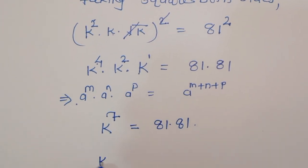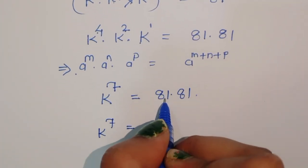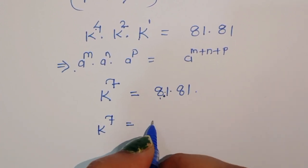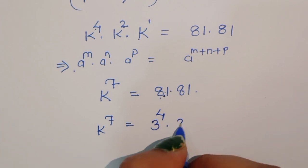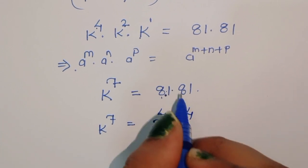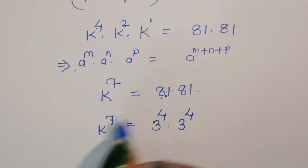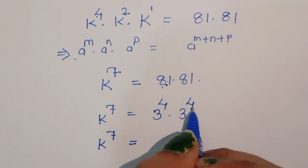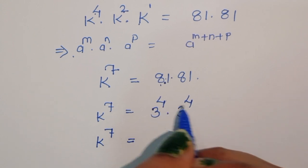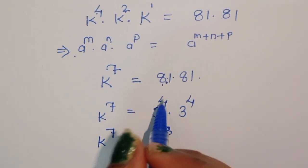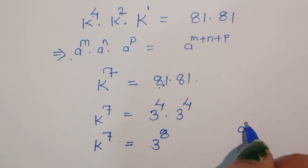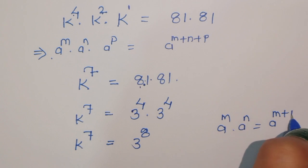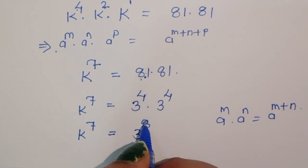Now k to the power 7 equals 81 times 81. We can write 81 as 3 to the power 4. So 3 to the power 4 times 3 to the power 4. Using the formula a to the power m times a to the power n equals a to the power m plus n, this gives us 3 to the power 8.